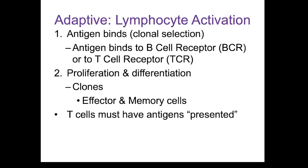The memory cells are going to be cells that stick around, present in case you are exposed to the same antigen again. If the same antigen infects you again, these memory cells will mount an attack. They've already been activated, so you don't have to go through the whole process of activation again. They can mount an attack very quickly, and therefore subsequent exposures to the same antigen will result in a stronger, more effective response in eliminating that antigen.